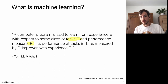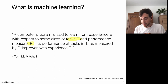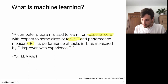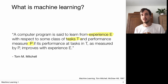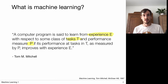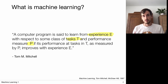Then how are we going to do this? We're going to do this with experience E. This is the most important notion of machine learning — the concept of experience E, which is used to improve the algorithm. And this improvement is measured by the performance measure P.